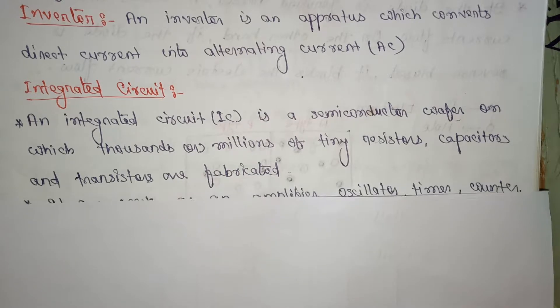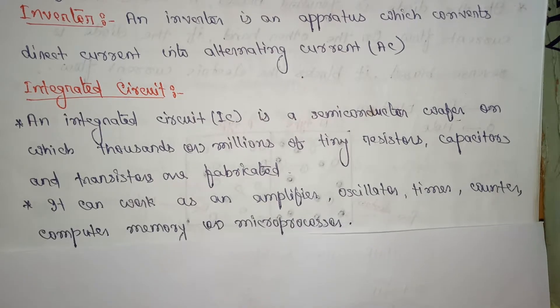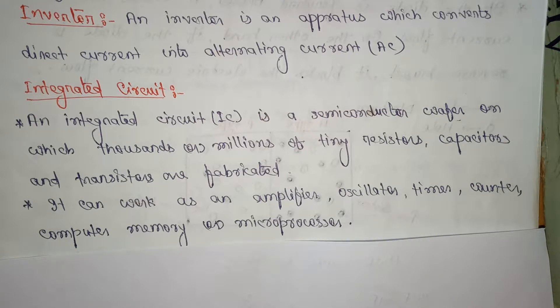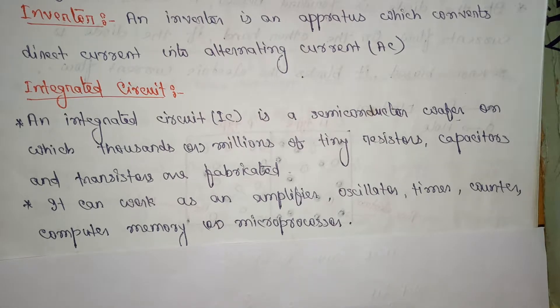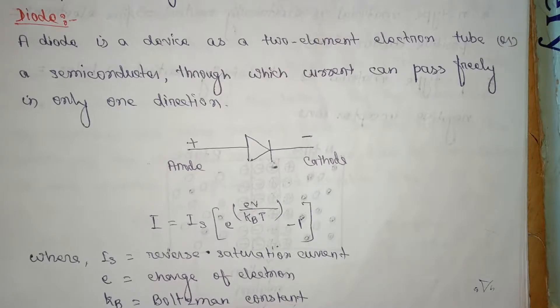Next definition: diode. A diode is a device as two element electron tube or a semiconductor through which current can flow freely only in one direction.